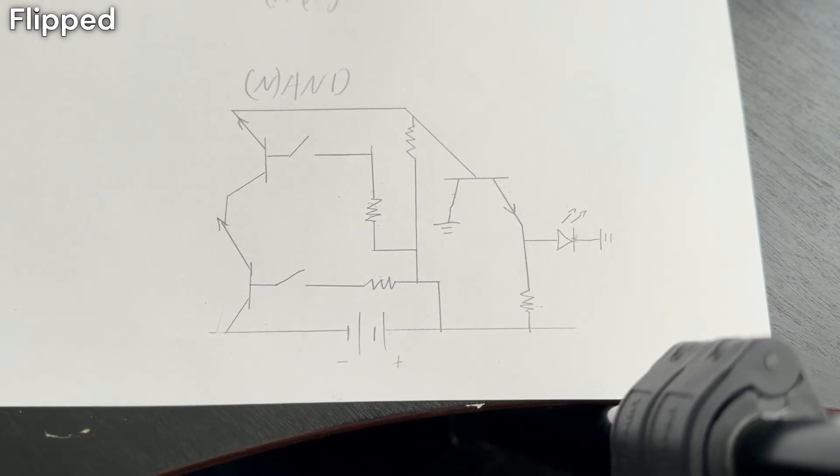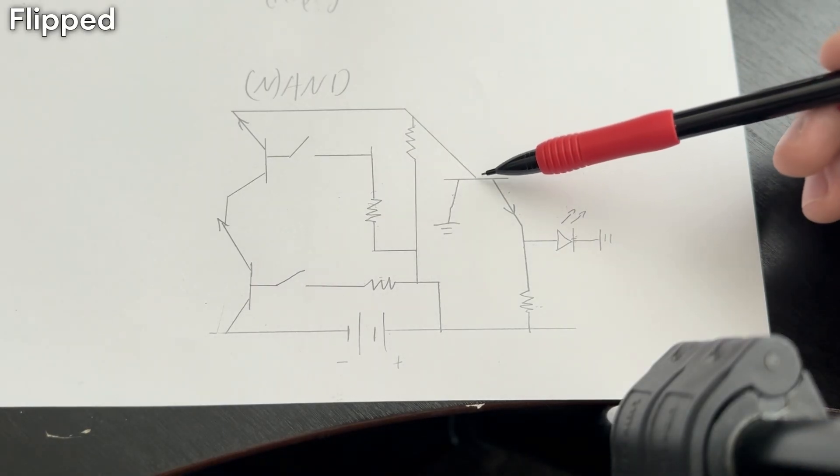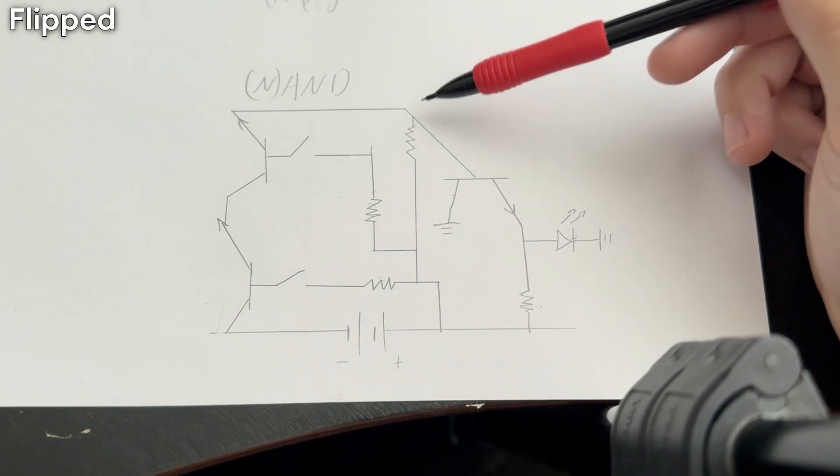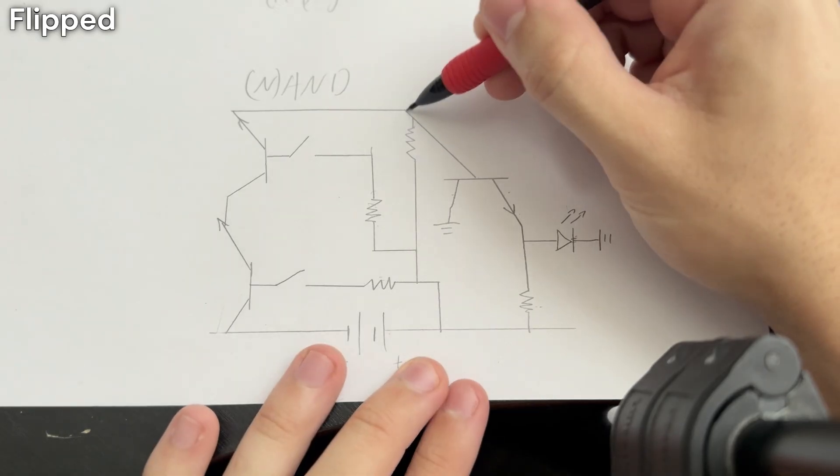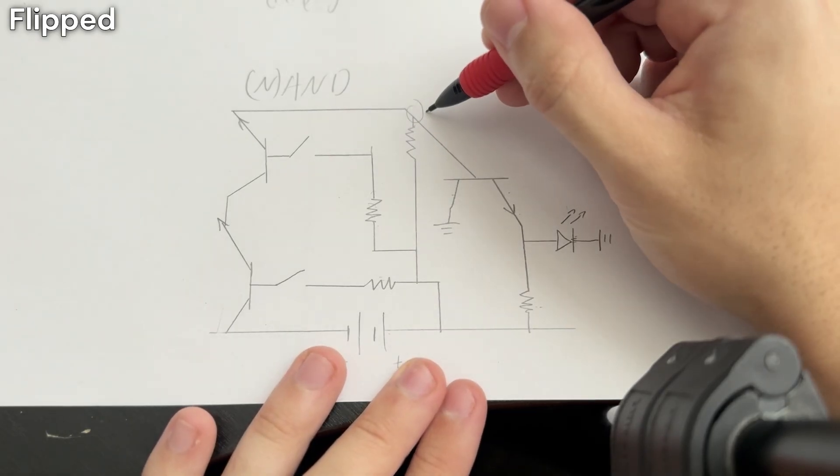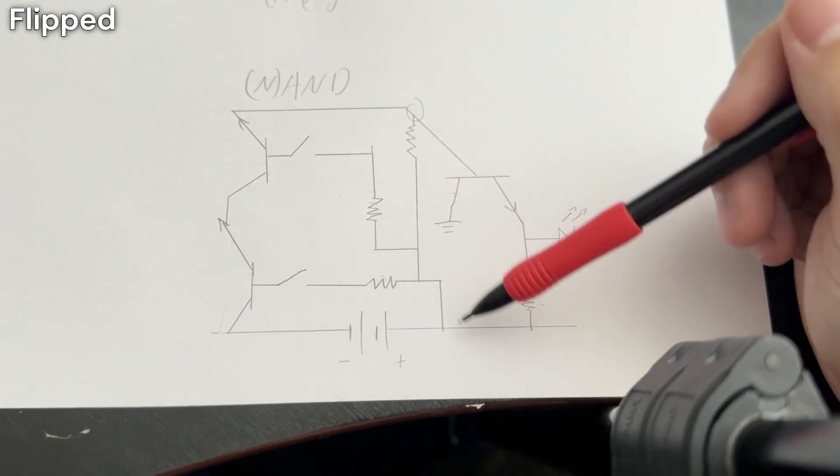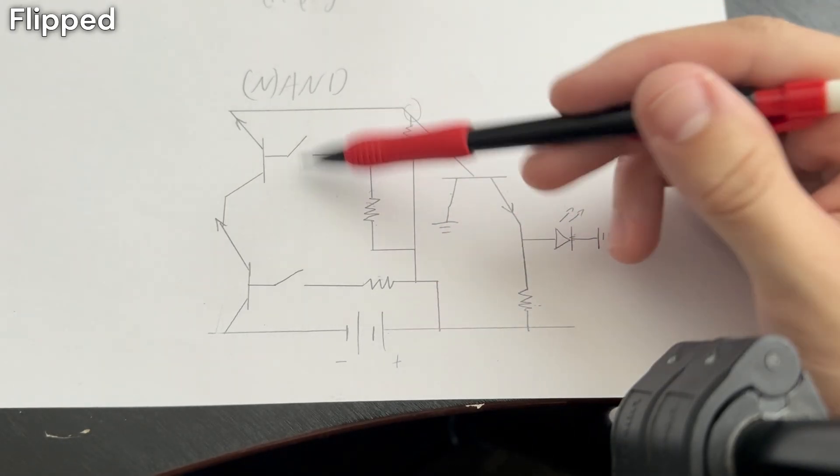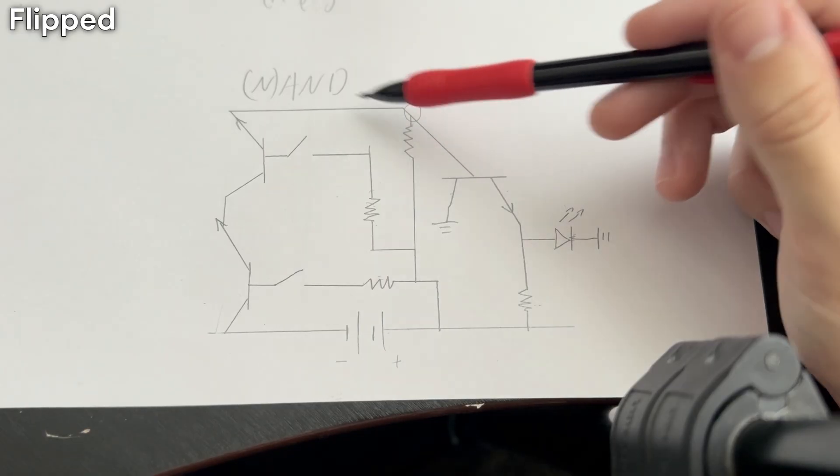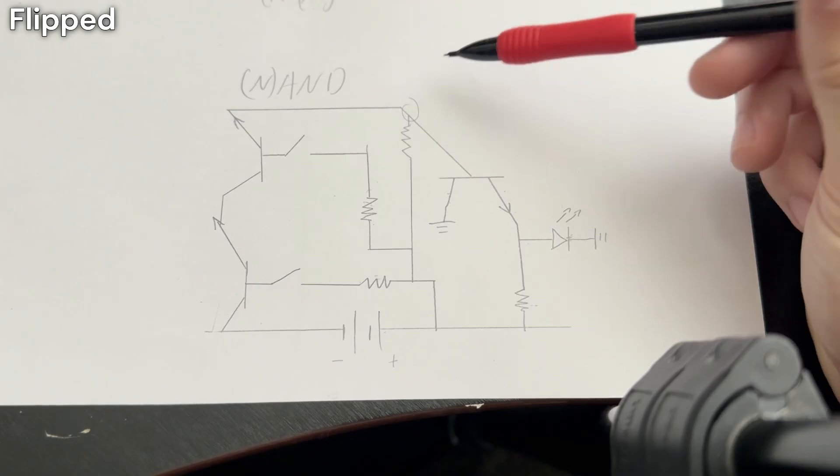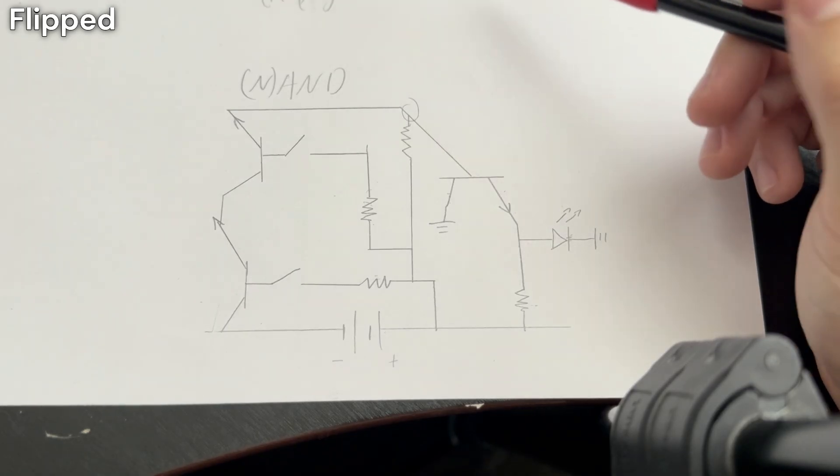And then the way we can make this a NAND gate is simply by removing this transistor right here. All we've got to do is remove it. So if we remove it, that means this node right here can be hooked up directly towards our LED. And like I said, if it's open, it's going to be high. And if it's closed, then this node right here is going to be hooked up directly to the ground, and it's going to be 0 volts. Super simple.